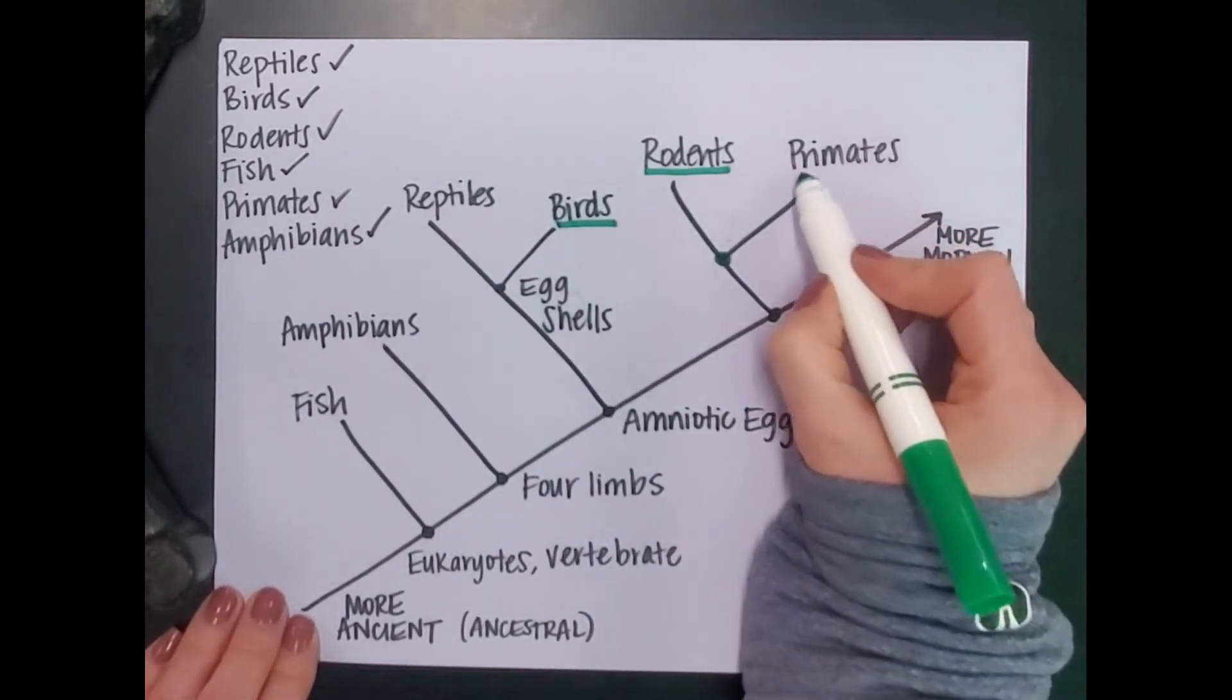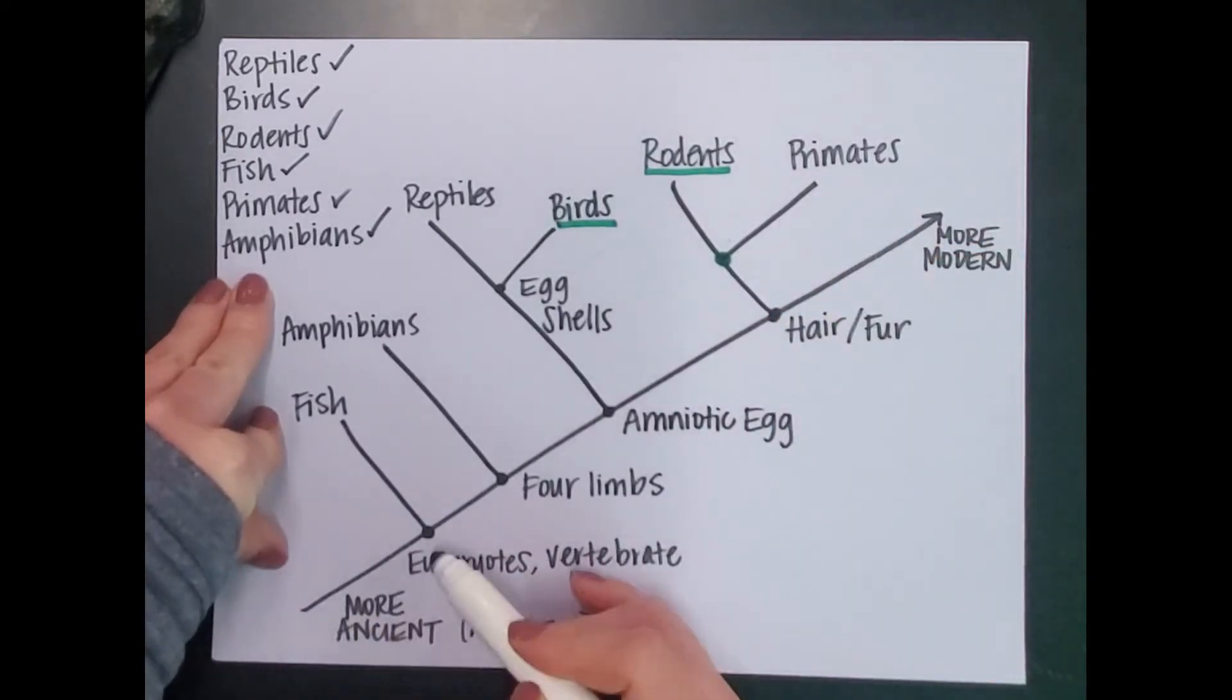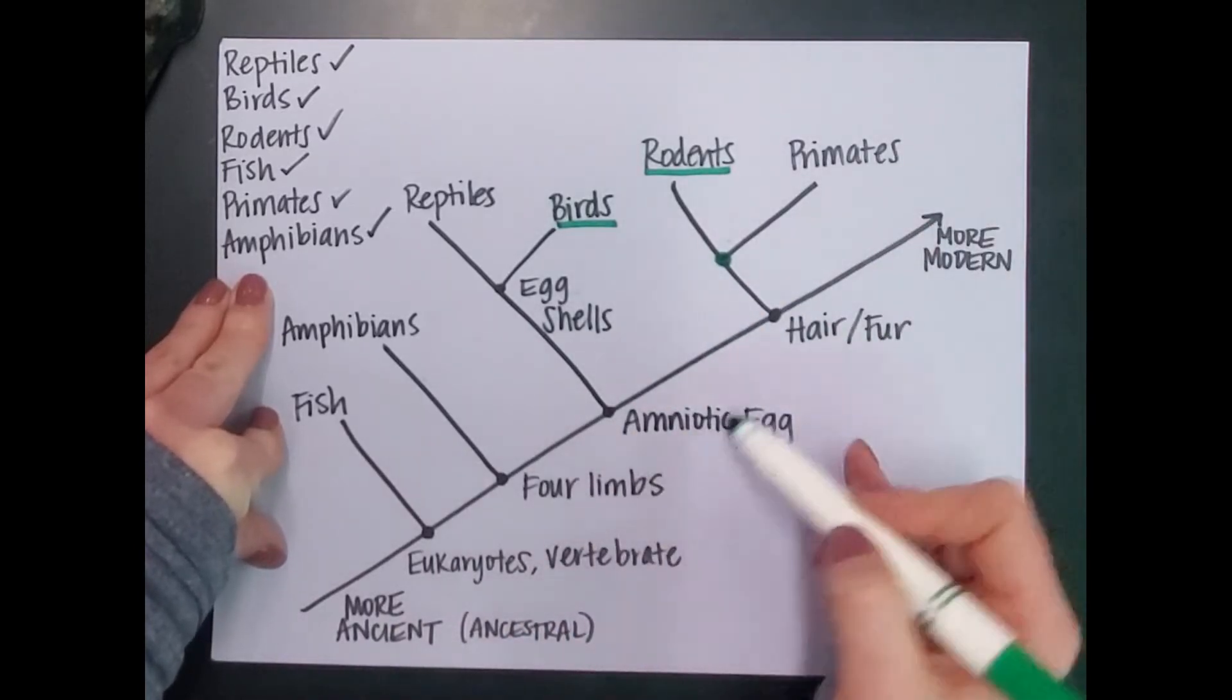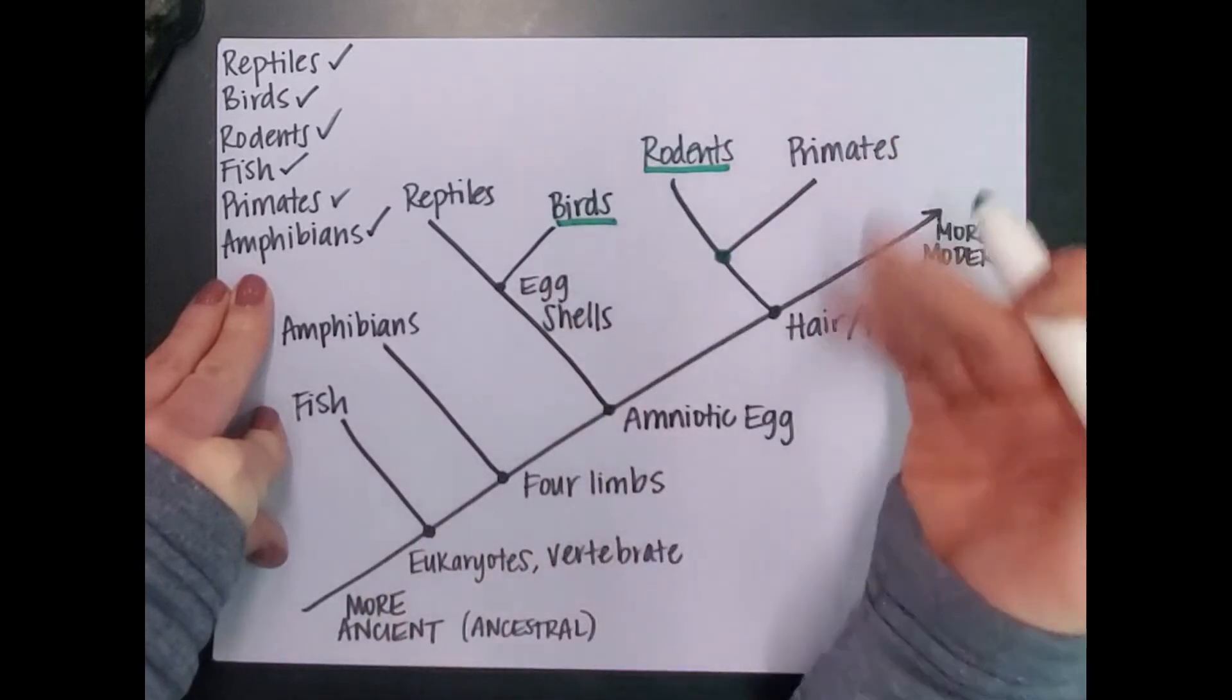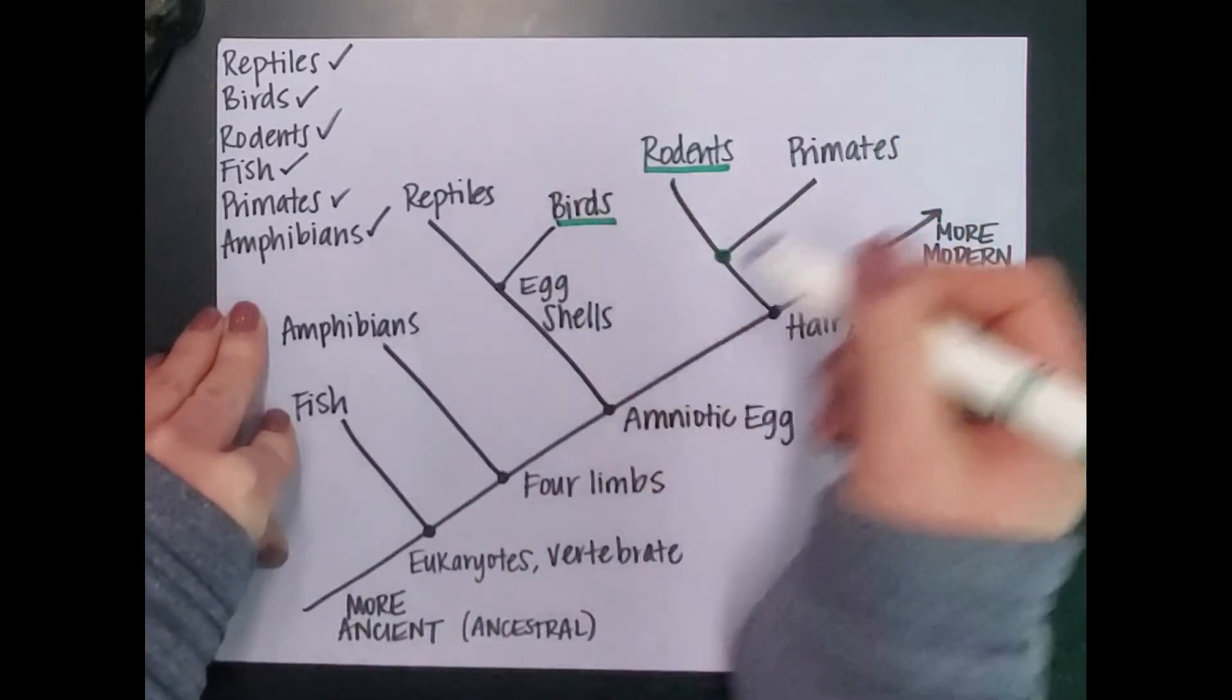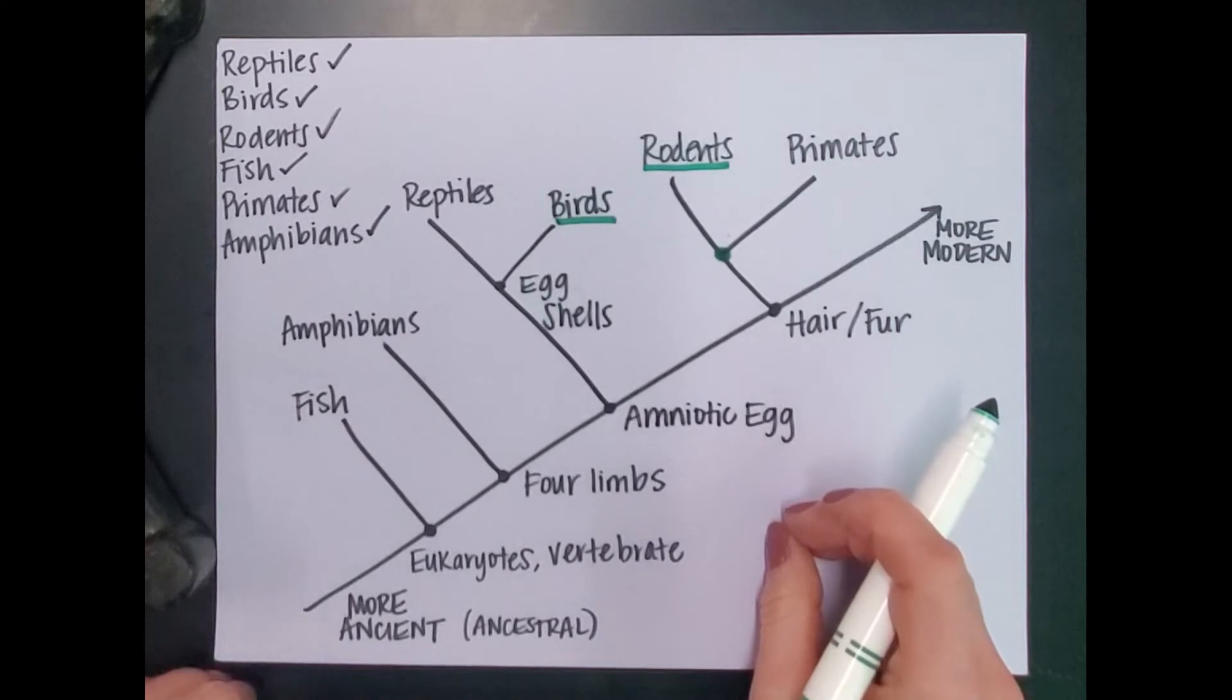If I wanted to know what was most closely related to primates, I wouldn't say fish. If I look here, fish only are eukaryotes with vertebrae. Primates also have four limbs, amniotic eggs, and hair or fur. So they are not closely related because they're separated by characteristics and space on our cladogram. One of the easiest things to do is just measure the distance with your eye and see which is most literally close on the cladogram for it to be closely related.